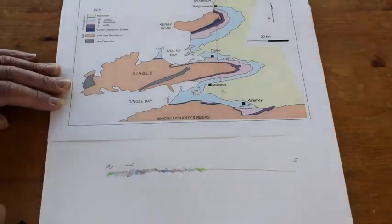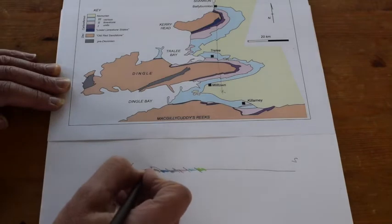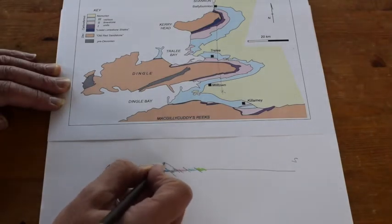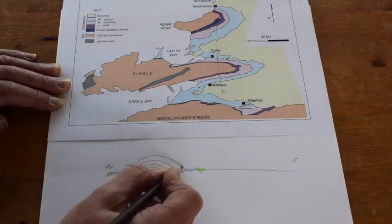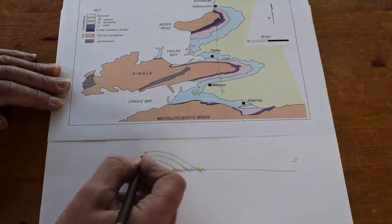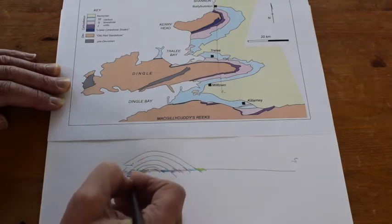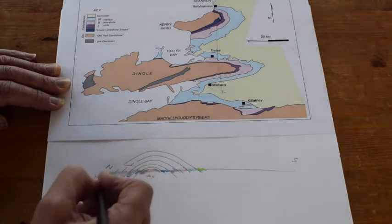As we come down to the south away from the Kerry Head structure we go back out through the same units. We can draw the old red sandstone all the way across, then the lower limestone shales back through here.